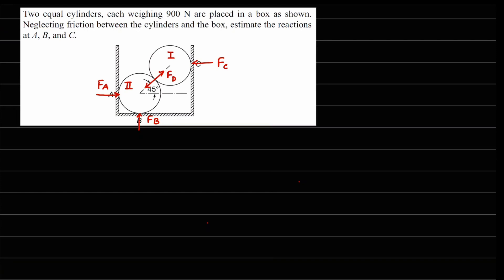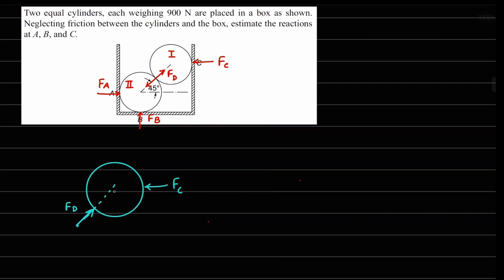To find these forces we apply the conditions of static equilibrium. Let's draw the free body diagram of cylinder number one. The forces on cylinder one are: one force FC coming from the side, one force FD coming at an angle of 45 degrees, and the weight W acting downwards.